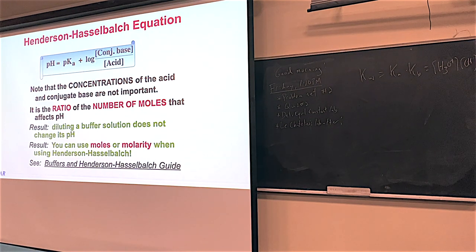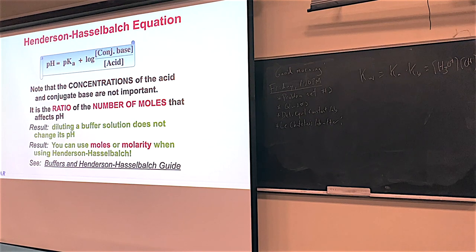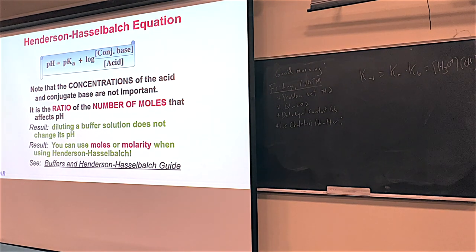Fair warning: I am known as the HH chemist on campus. HH means Henderson-Hasselbalch — two scientists that figured out you can do some cool things with buffers. Even though we're focusing on buffers right now, we'll be able to use this to talk about the pH of titrations and also to calculate the pH of any combination of acids and bases. Henderson-Hasselbalch: pH equals pKa plus log base over acid.